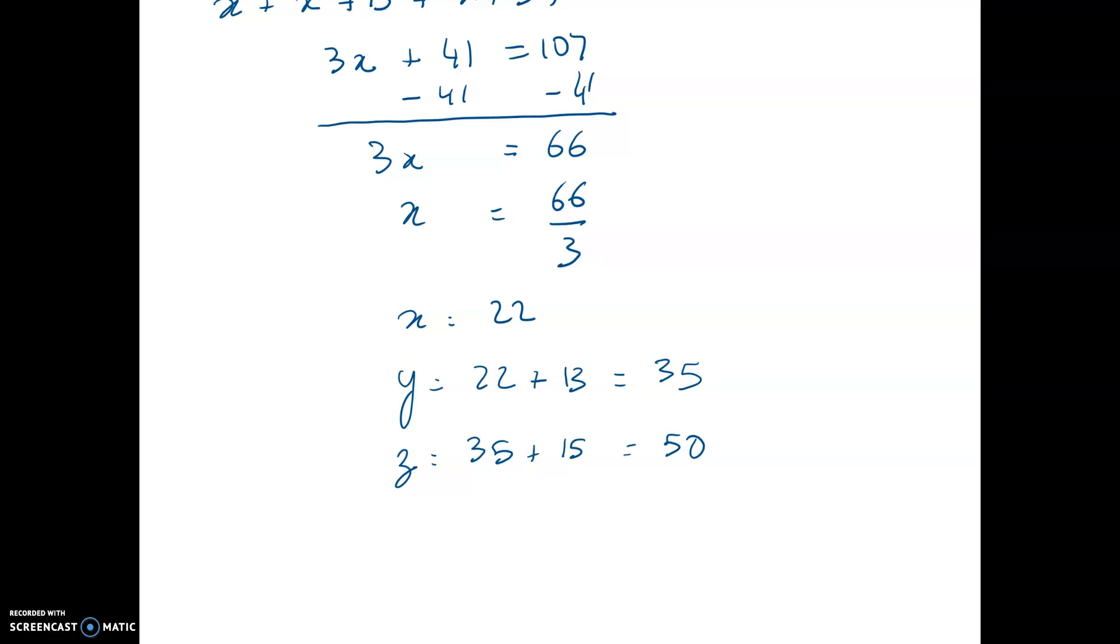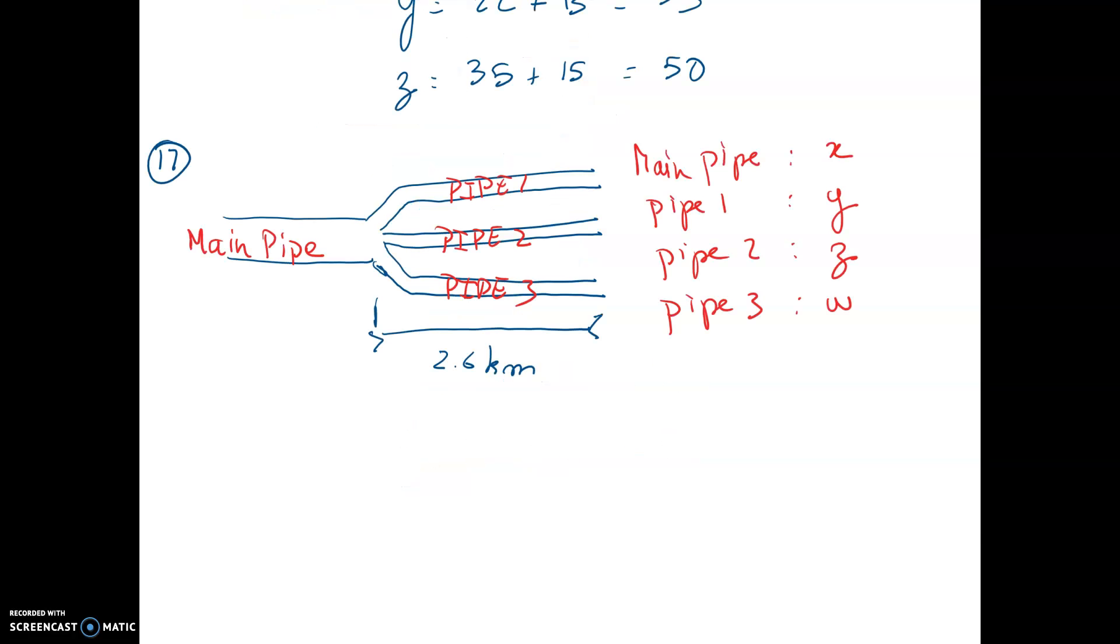Let's try to do one more. All right. In this problem number 17, a natural gas pipeline feeds into three smaller pipelines, each of which is 2.6 km longer than the main pipeline. The total length of the four pipelines is 35.4 km. And the question is, how long is each section?